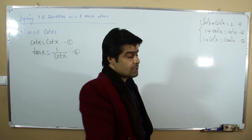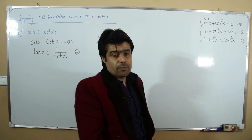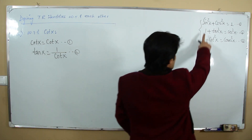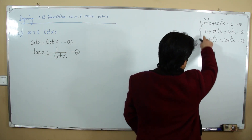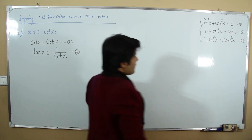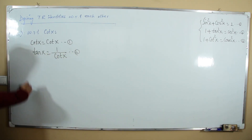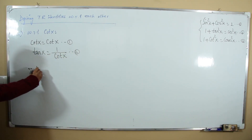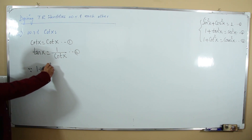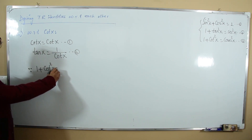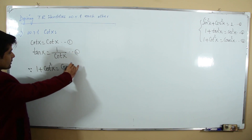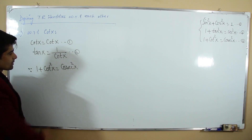Use the trigonometric identity containing cotangent — the third identity: 1 + cot²x = csc²x.